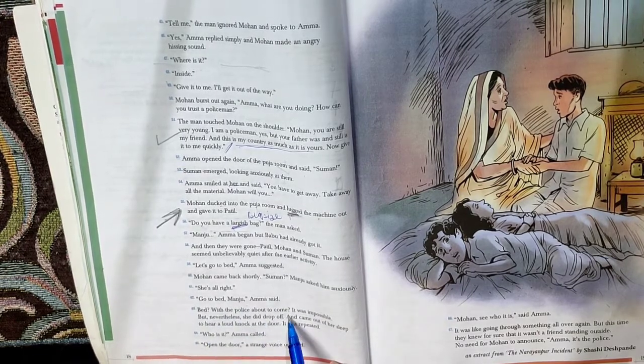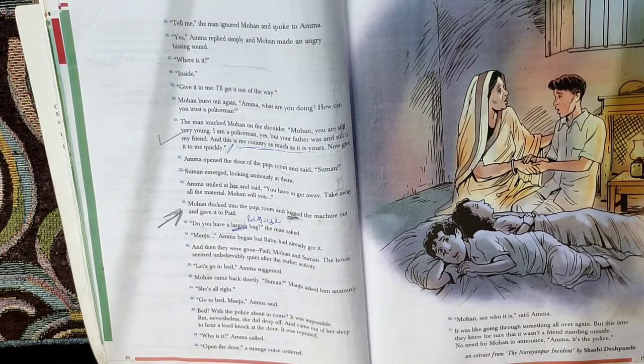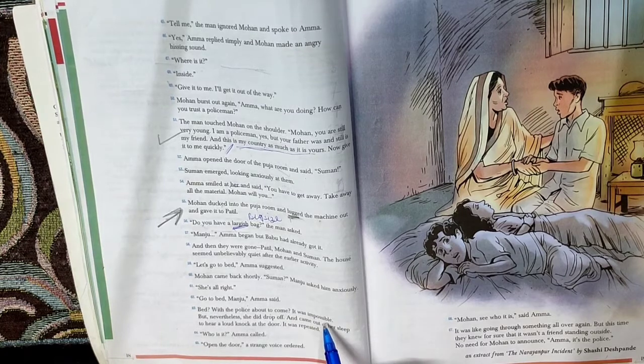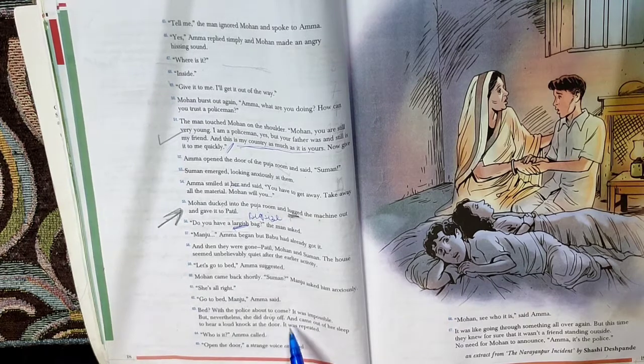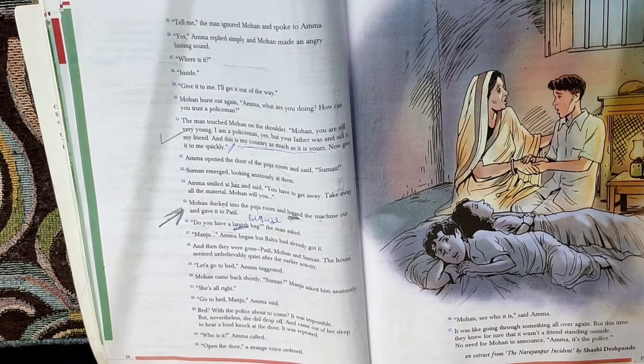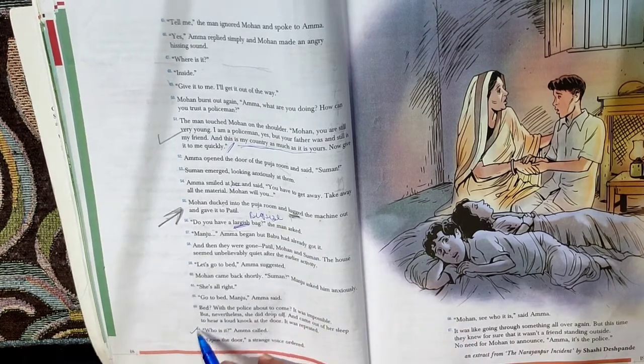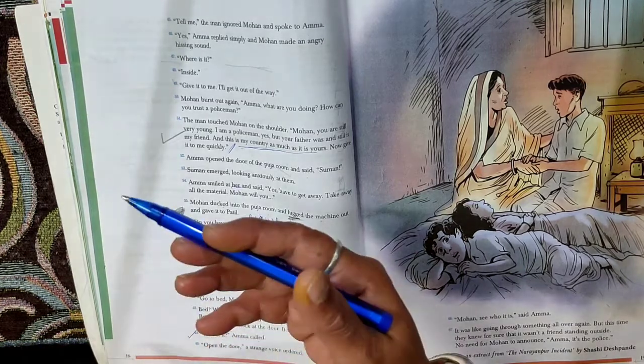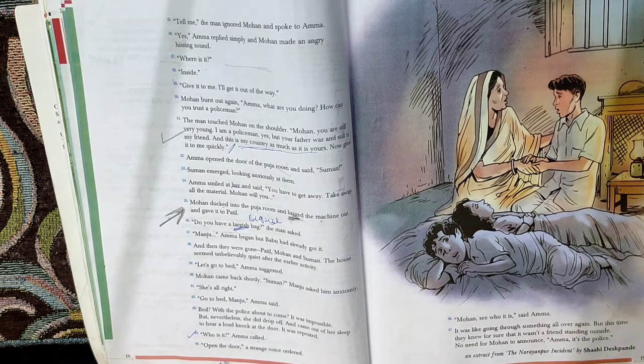Bed with the police about to come. Because you remember there's going to be a search of the house now. The real police is going to come. It was impossible to go to bed and sleep. But nevertheless she did drop off and came out of her sleep to hear a loud knock at the door. It was repeated. The same things happening again. Who is it? Amma called. Again the same things happening. First time it was Sub-Inspector Patil. Again it is somebody at the door.